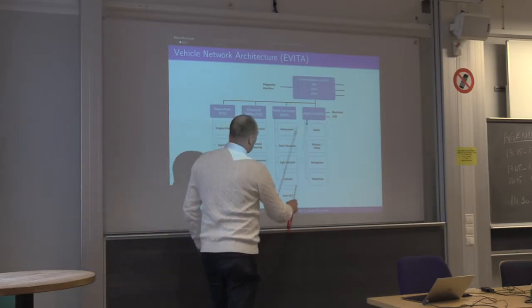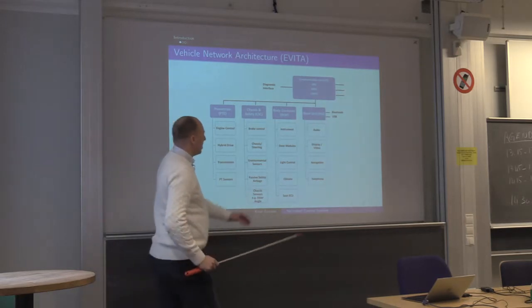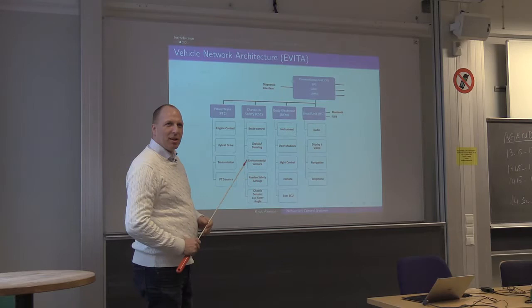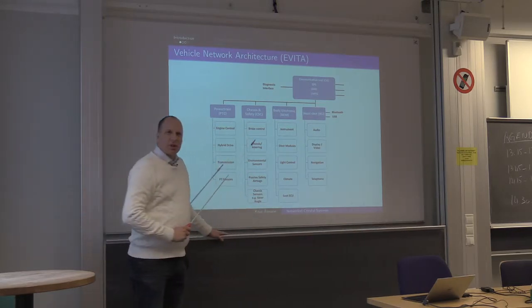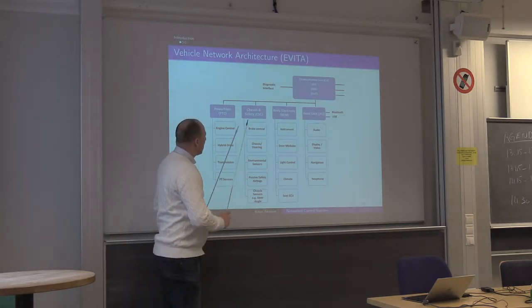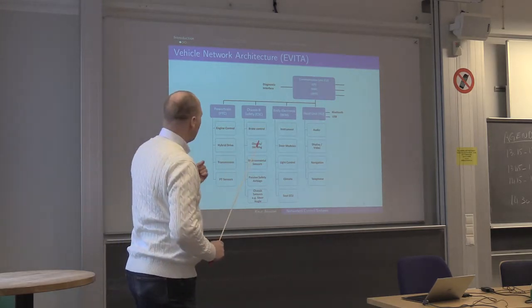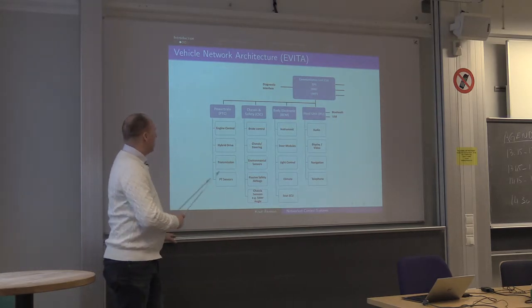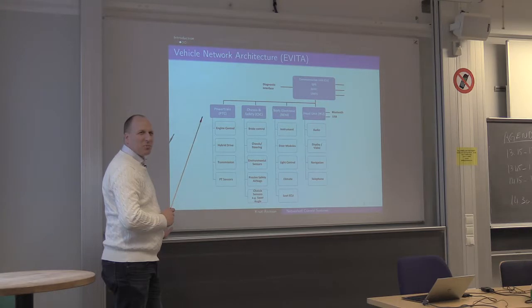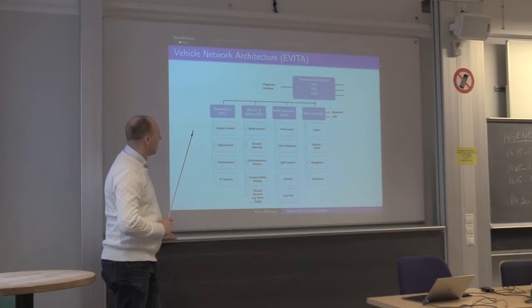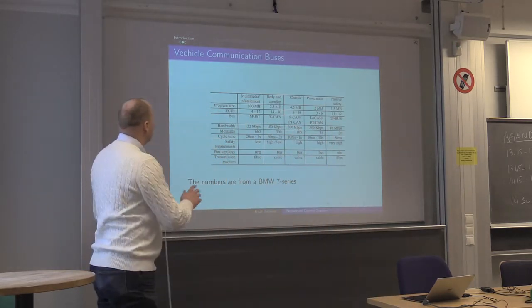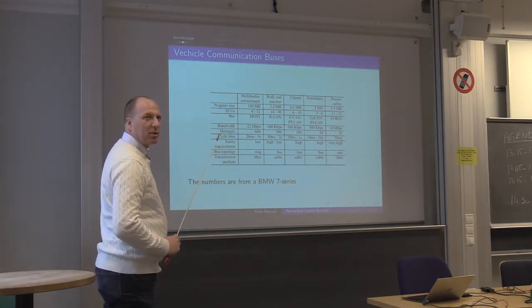You have other systems like the audio and display system where you typically send a lot of data, but it's not safety critical — you want high bandwidth instead. Whereas for brake control you don't send very much data, but you need to know that the message is delivered in time. Then there are others in between, like engine control — if the engine is not controlled in the right way, it might not be a safety problem necessarily, but it might not work as well as it should. This is one reason why there are a lot of different communication buses in the same vehicle today.